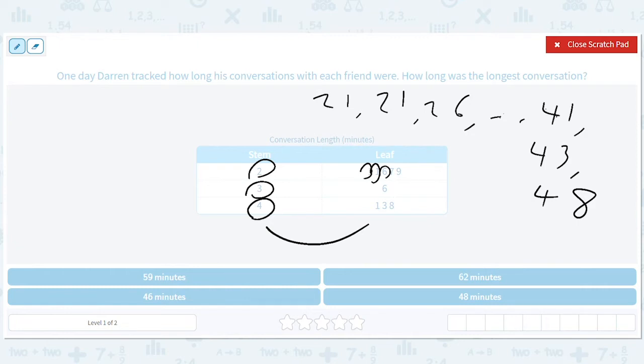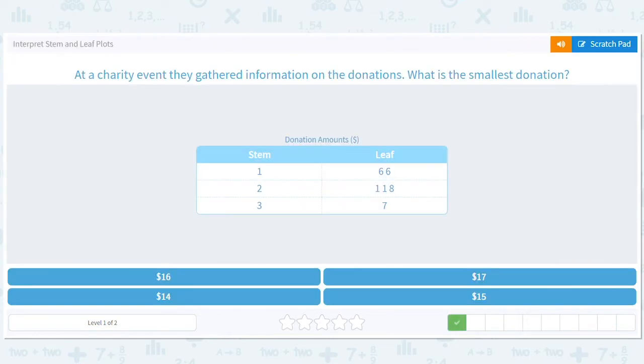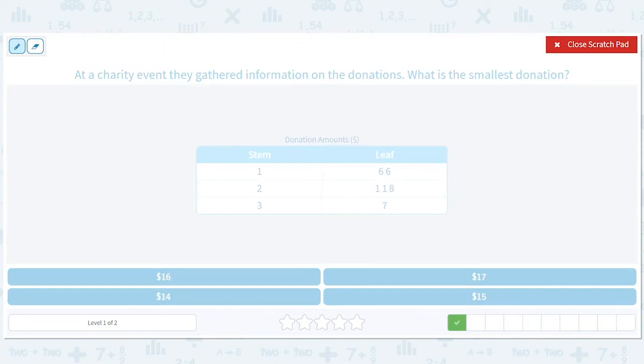At a charity event they gathered information on the donations. What is the smallest donation? Okay, well I think you know, right? I mean it's got to have the smallest stem and the smallest leaf, so 16.